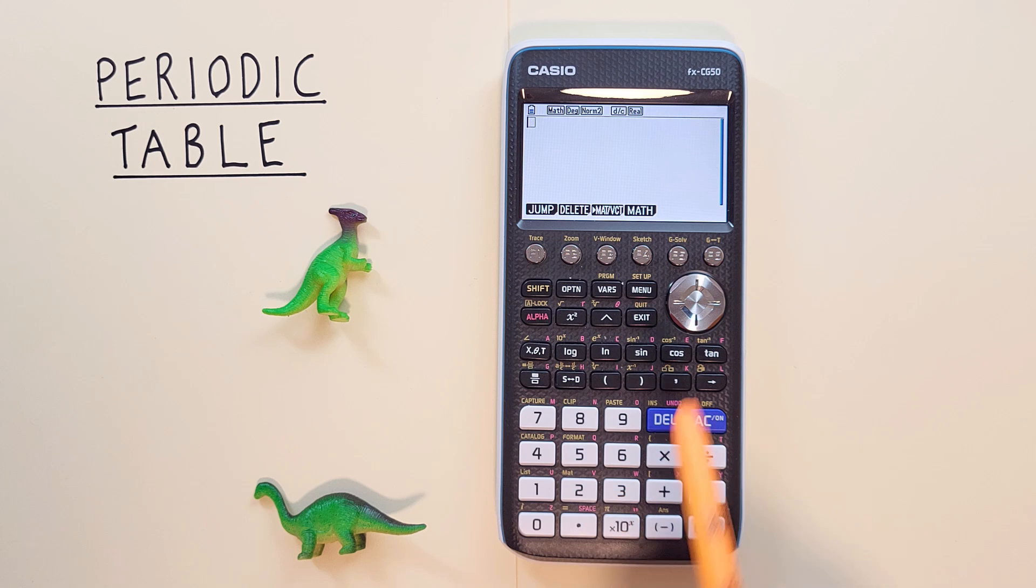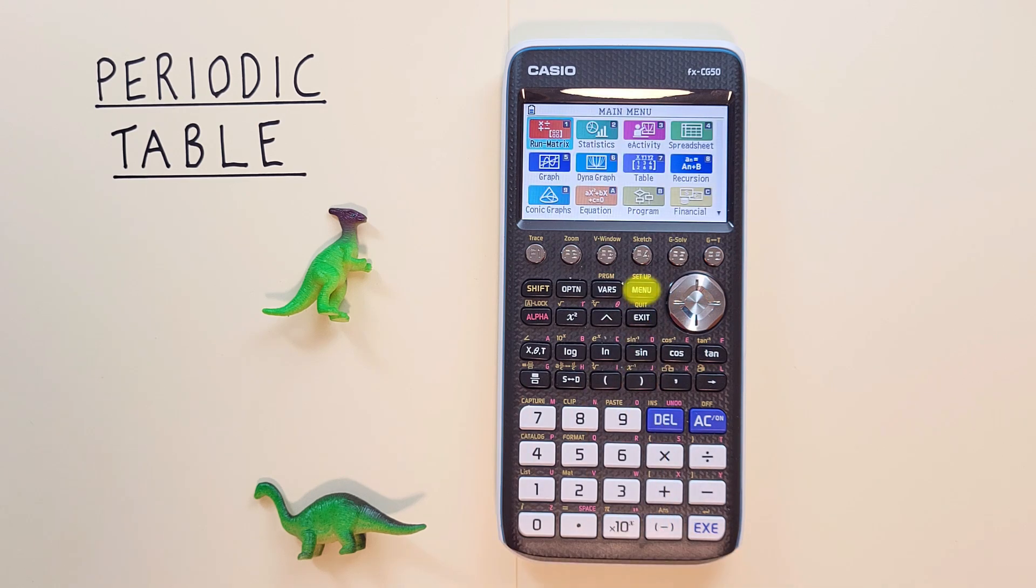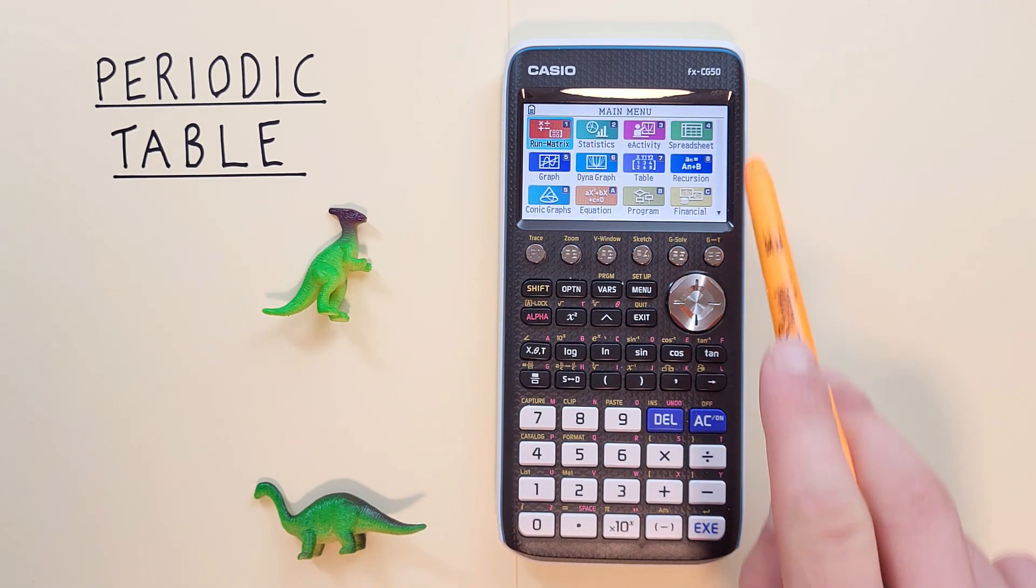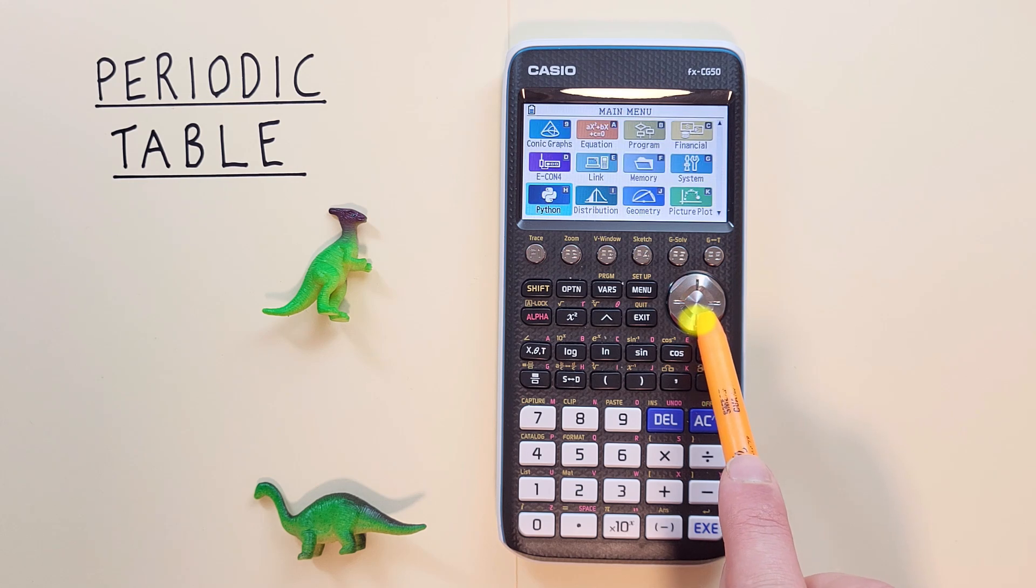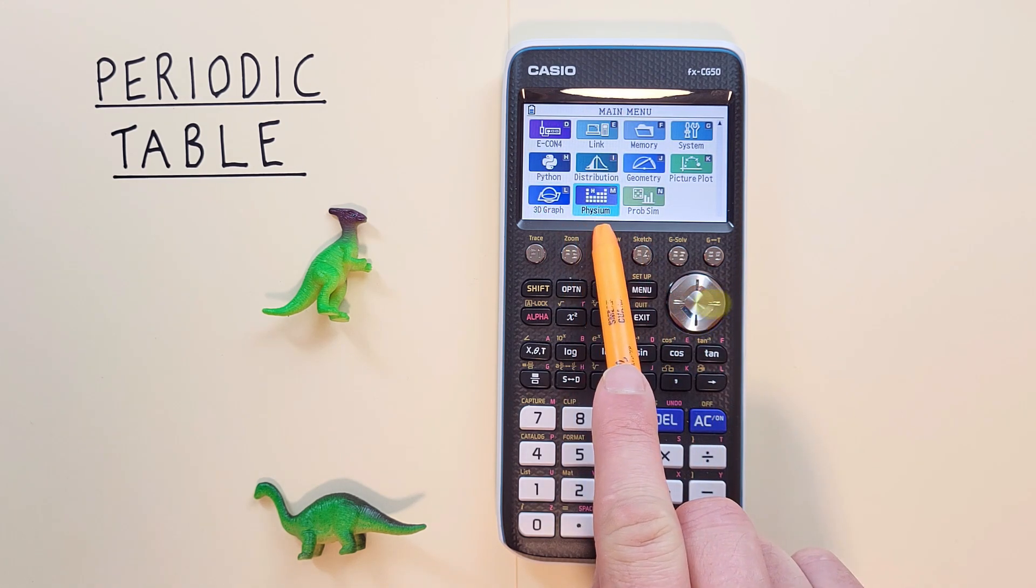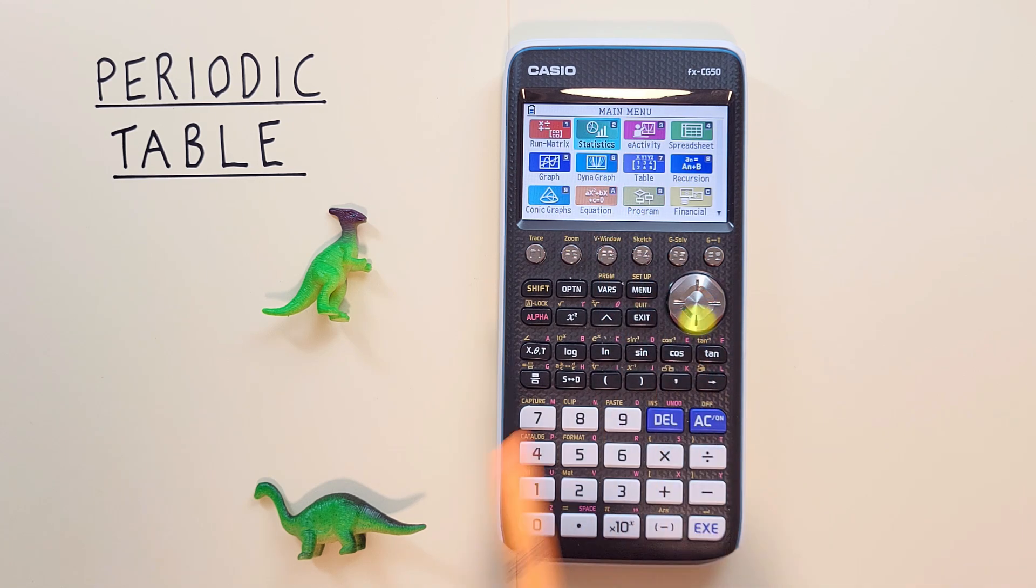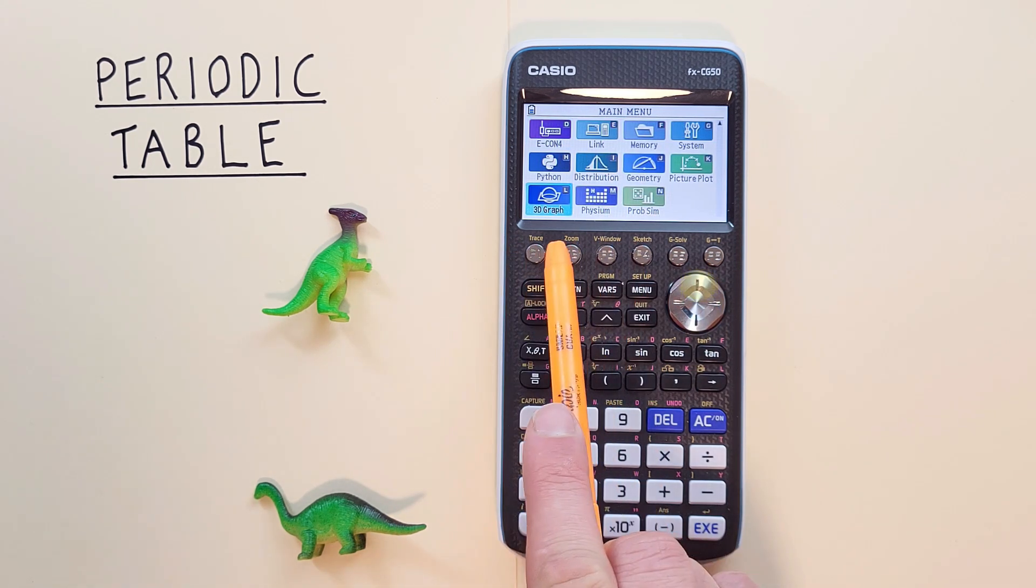To get there, from our main screen, first we have to navigate to the main menu by pressing the menu key. And then we see the main menu here. To get to our periodic table we can either scroll down and over to Physium or we can scroll up and go in the reverse direction and get us there a little bit faster.